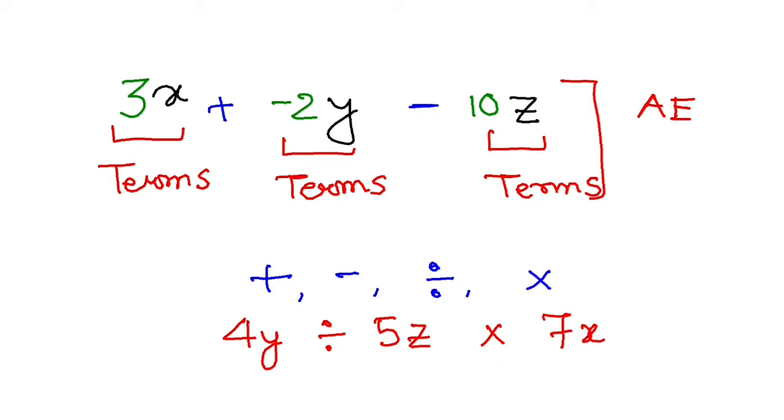Basically, an algebraic expression has three items. One, I have the variables. Another, I have the constants. And then I have the operators: operators like plus, minus, division and product.